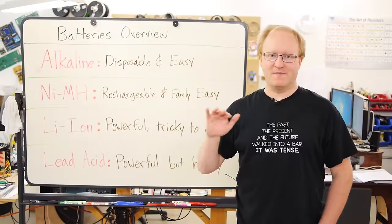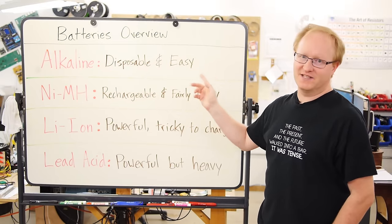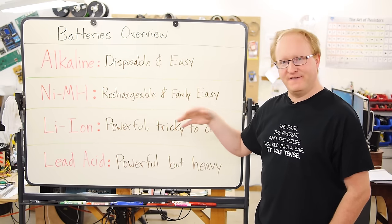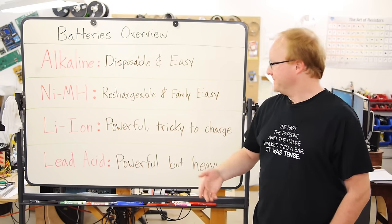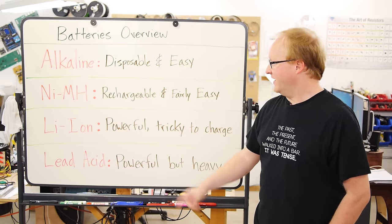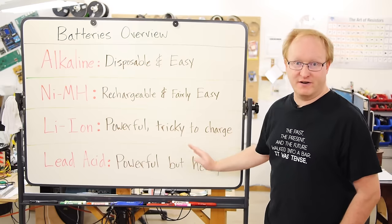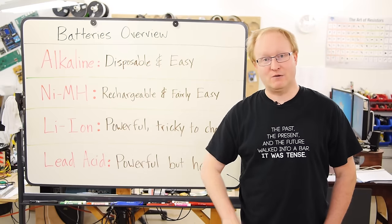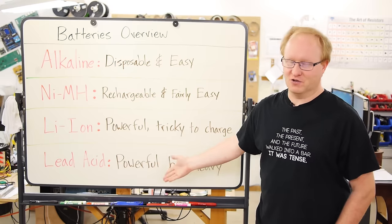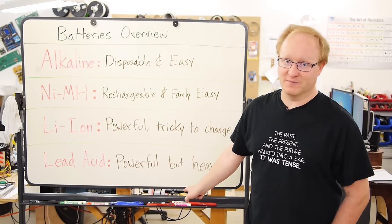A quick overview of all the battery types we talked about in this episode. Alkaline, they're disposable, easy to use, but not super great for the environment. Nickel metal hydride is a rechargeable battery, fairly easy to use, decent power. It doesn't require as complicated a charging circuit as lithium-ion does. Also, it's a lot cheaper than lithium-ion. Lithium-ion, powerful, but trickier to charge. You have to make sure you do it right, otherwise you can have a catastrophic failure. Finally, lead-acid batteries. Very powerful, great for vehicles and large robots, but heavy. So you don't want to be carrying that around in your pocket.